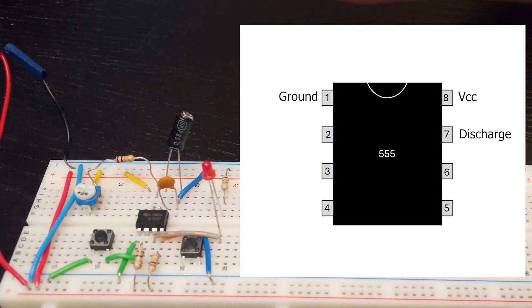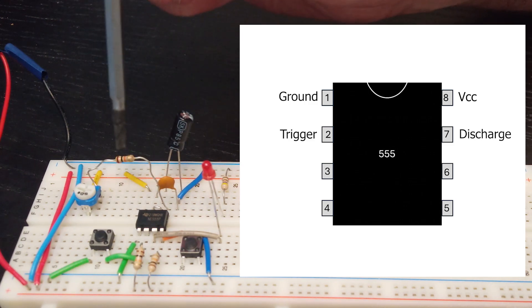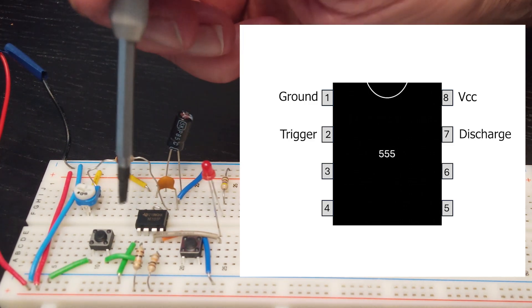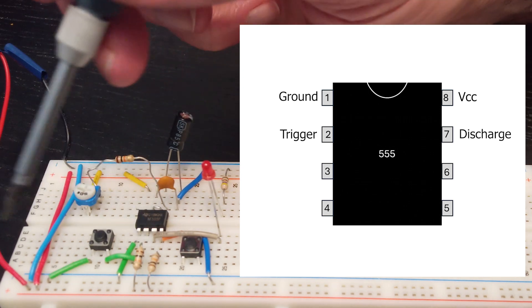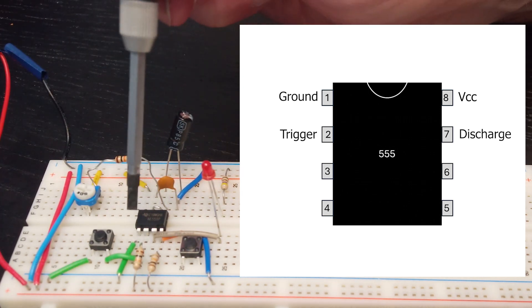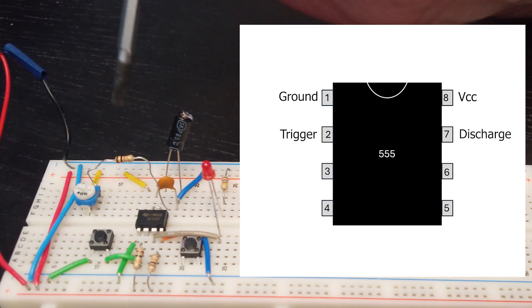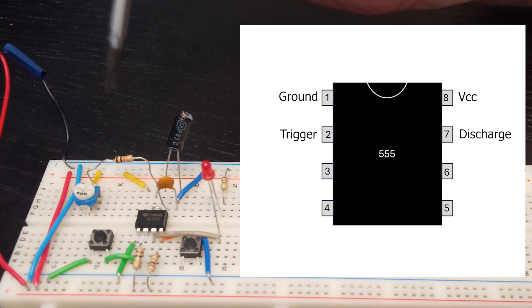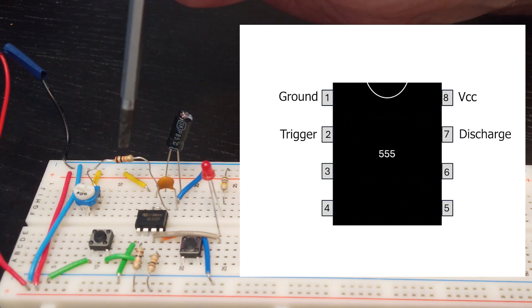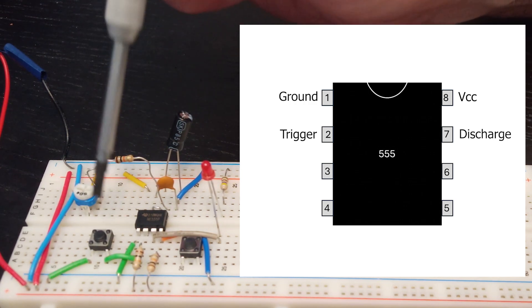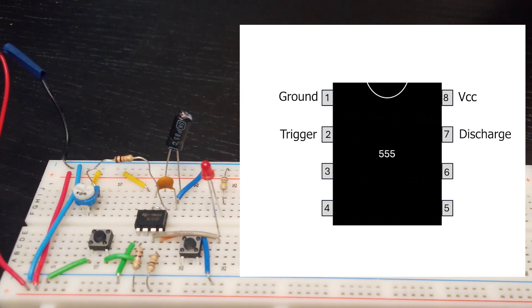So a couple of other important connections. Pin two over here is the trigger and you can see that's connected via a resistor to the positive supply rail and this is what's known as a pull-up resistor because what it's doing is pulling the voltage present at that pin up to the supply voltage. That's important because for the chip to activate the RC network, the 555 is looking for a low voltage to be present at the trigger pin. And we achieve that with this button here which when depressed will connect the trigger pin to ground, thus driving it low and triggering the circuit.